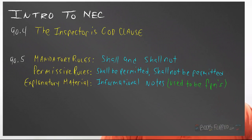We move on to Article 90.5 — that is rules that we have to do. Those rules say shall and shall not — mandatory rules. You have to do it or you can't do it. The next set of rules you're going to see in the code are permissive rules, which are shall be, shall not be — maybe or maybe not. Then we have informational notes, which is basically what all the annexes are. We'll find informational notes all throughout the code — they're notes to give us best practices. They used to be called FPNs or fine print notes; they are now called informational notes.